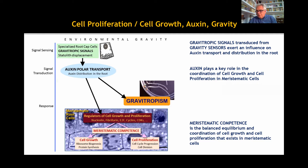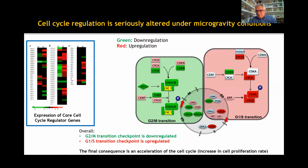It is known that gravitropic signals influence the auxin polar transport in the root. Auxin is ultimately responsible for the process of gravitropism, by which growth is oriented according to the gravity vector. Auxin is also the main regulator of root meristematic cell function — that is, cell growth and cell proliferation — whose coordination produces meristematic competence. Therefore, auxin is the mediator between sensing of gravity signals and the effects of these signals on development at the level of the meristematic tissue. We know that microgravity, as it exists in spaceflight, disrupts meristematic competence by altering the regulation of the cell cycle.